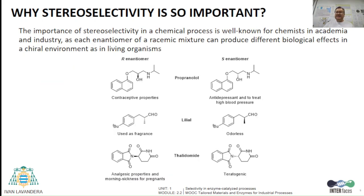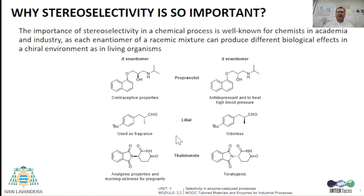Stereoselectivity is extremely important since it has been well known for decades that each enantiomer of a racemic mixture can produce different biological effects in living organisms, which could be both beneficial, as in the case of propranolol — one can be desirable while the other one can be very harmful — as in the well-studied case of thalidomide.